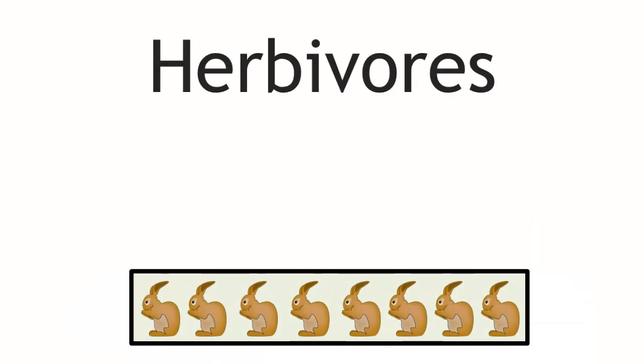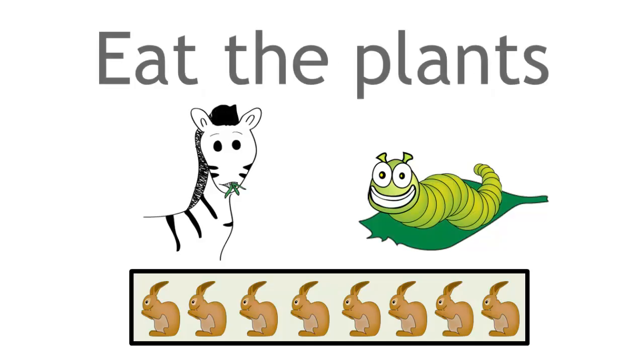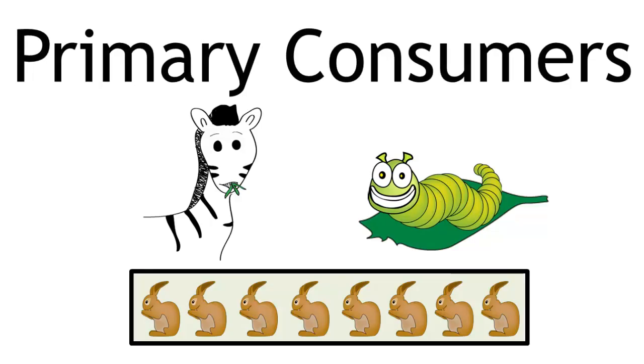From the producers, the second trophic level is the herbivores, the organisms that eat the plants. These organisms are called the primary consumers. They are the first step when nutrients are consumed.